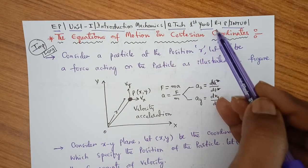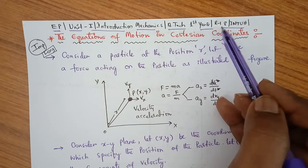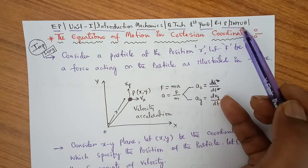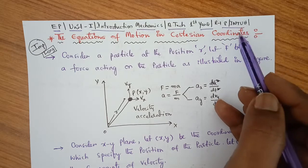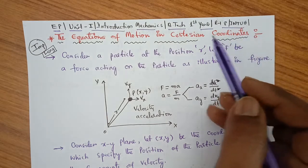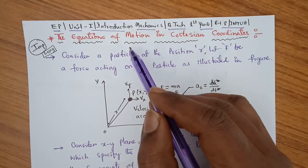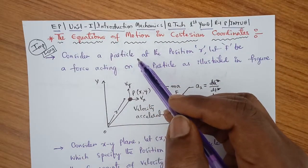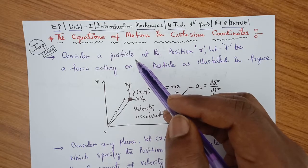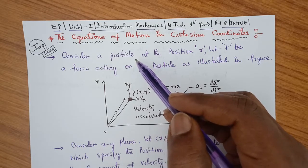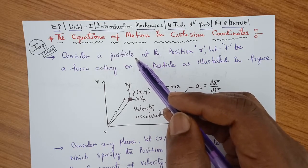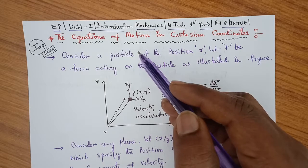This syllabus is according to Regulation 18 for JNTUH. Now let us see this topic in detail. In the last class, we have seen the motion of a particle in one dimension with two examples.